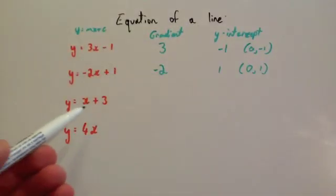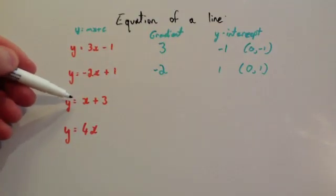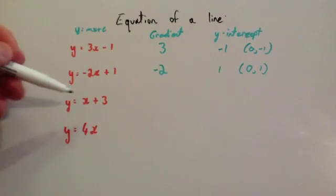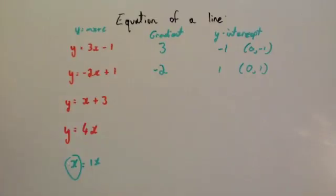Y equals x plus 3. So the gradient, well, this has actually got a 1 in front of it, so it's y equals 1x plus 3. You remember, in algebra, x equals 1x is the same thing, but you don't tend to write that one.